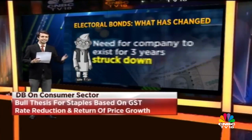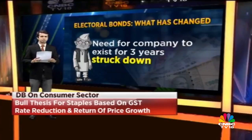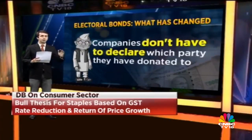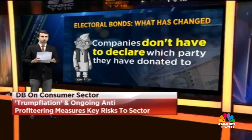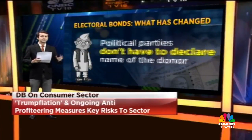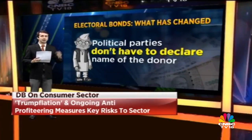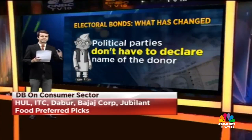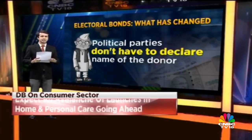Secondly, companies that have existed for less than three years will also be allowed to make donations to political parties. Companies donating money via electoral bond will no longer need to disclose which political party they are donating funds to. The electoral bonds will not need to carry the name of the payee, which means companies can make anonymous donations through these bonds. The finance minister clarified that the SBI will have to check the KYC norms of the donor before buying these bonds.